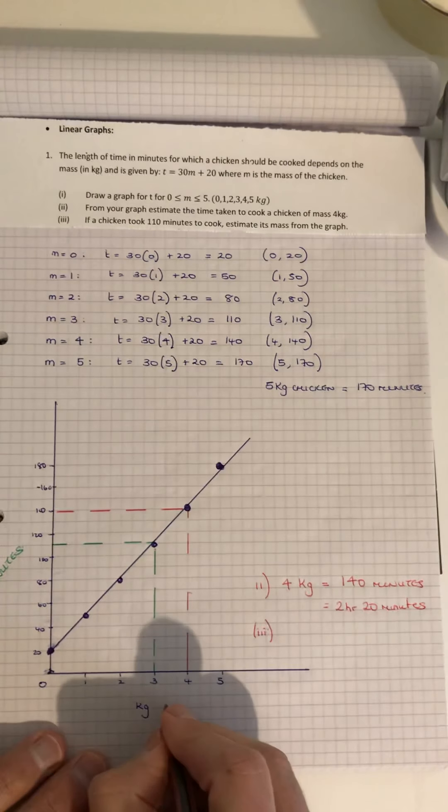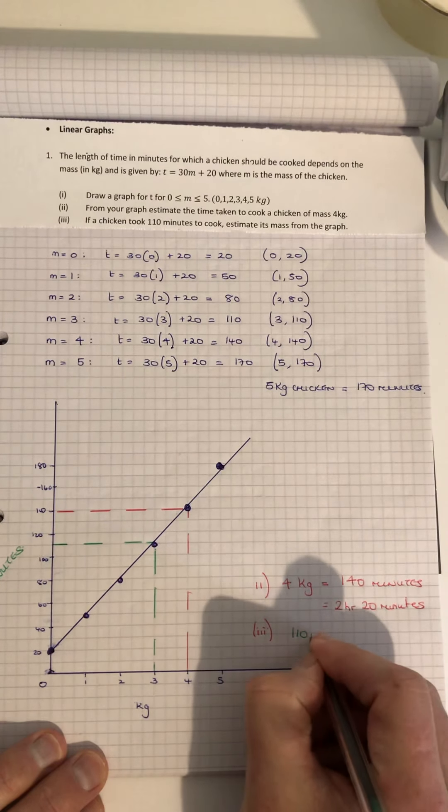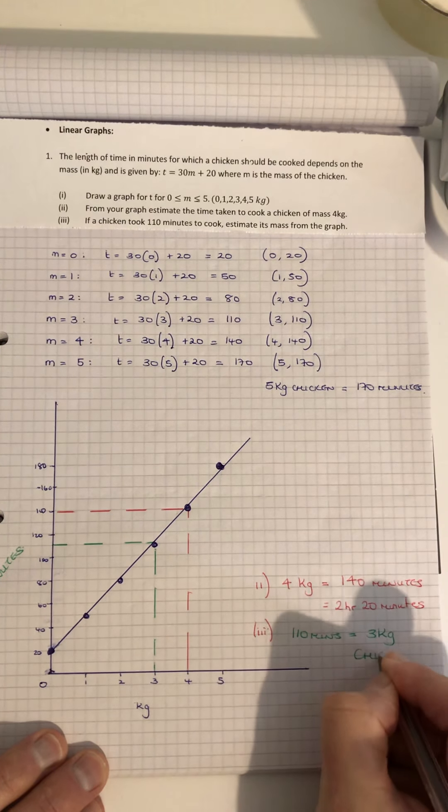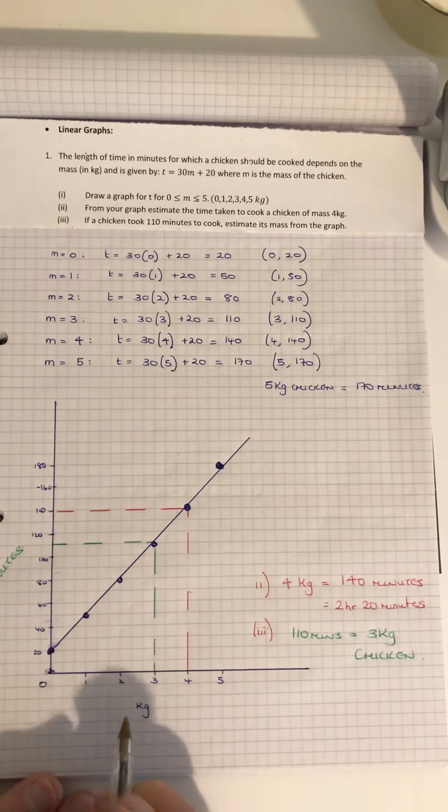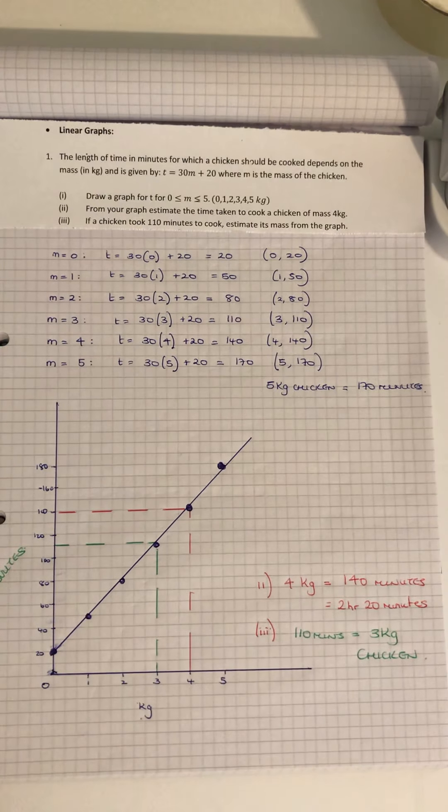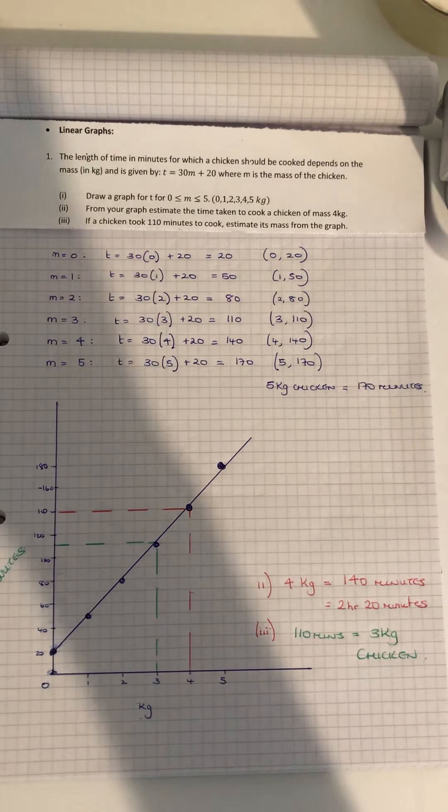110 minutes is equal to a 3 kg chicken. That's the weight and the time for cooking a chicken, and that's an example of this type of graph for you.